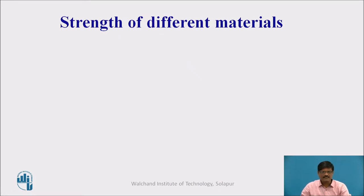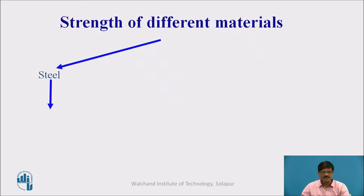Let us discuss regarding the strength of different materials, especially those used in the civil engineering field. For example, if you take a steel material, the strength of steel is basically tensile strength. Steel is very strong in tension and very weak in compression. Therefore, primarily, the strength of steel is nothing but its tensile strength.